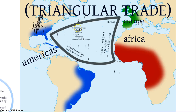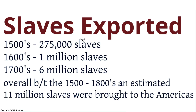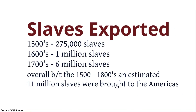The Europeans will then go back to Africa and give guns, cloth, and cash in exchange for slaves. To give some numbers: it varies from source to source, but our textbook estimates that 11 million slaves were brought to the Americas by the time the Civil War started in 1861.